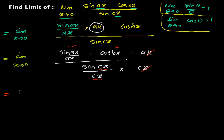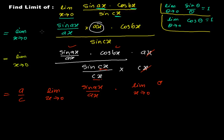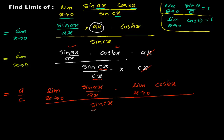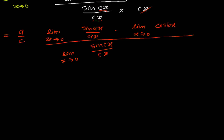Here cx is my angle, so cx over cx — x and x cancel out, and a over c is a constant I can take outside. So we have a over c, times limit x tends to zero of sine ax over ax, times limit x tends to zero of cos bx, divided by limit x tends to zero of sine cx over cx.